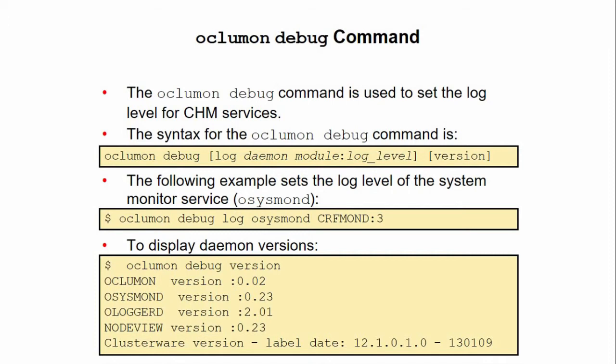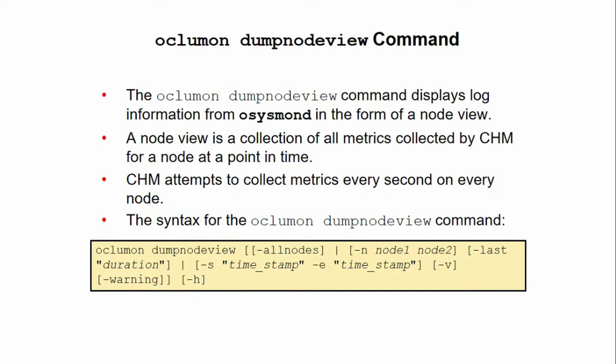You can use the OCLUMON dub node view command to view log information from the system monitor service in the form of a node view. A node view is a collection of all metrics collected by the Cluster Health Monitor for a node at a point in time. The Cluster Health Monitor attempts to collect metrics every second on every node; some metrics are static whereas others are dynamic.